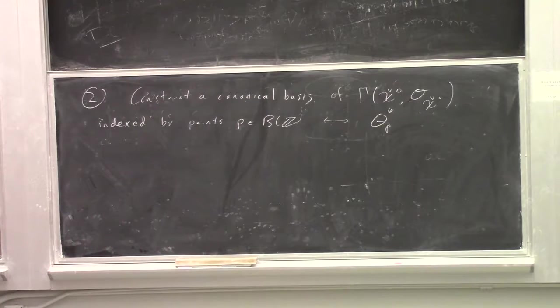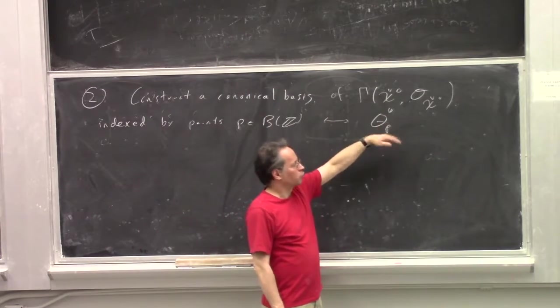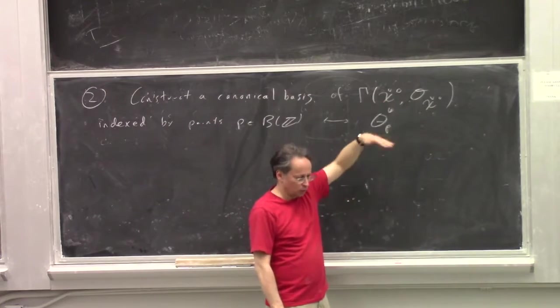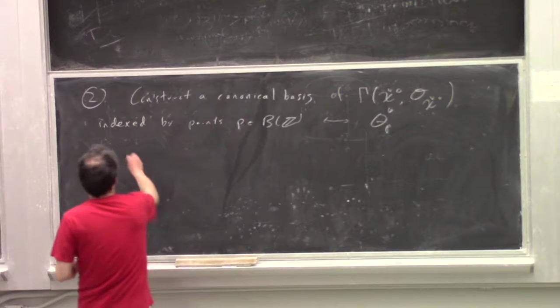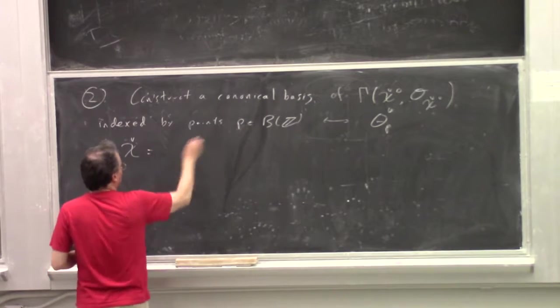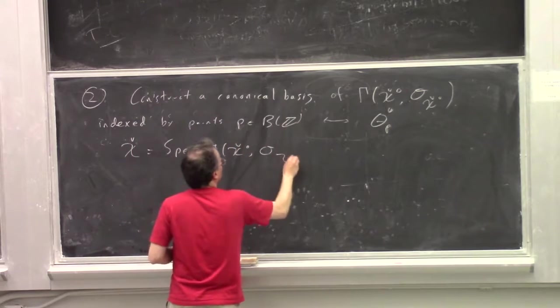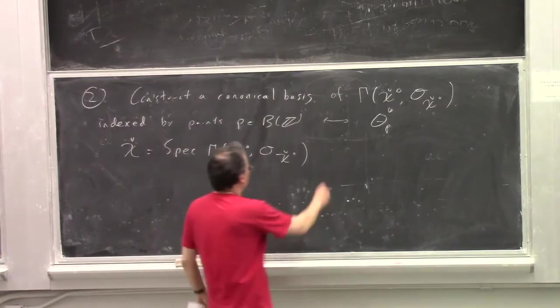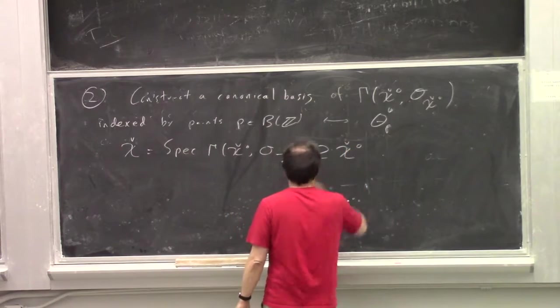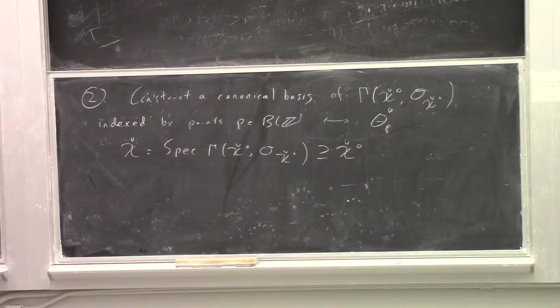But the main point is that this construction tells you that this does have a lot of functions. And in particular, this will be flat over the base ring. And then what you do is you define X check to get the spectrum of this ring. And the fact that you have enough functions here will tell you that this is a partial compactification.